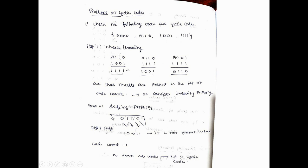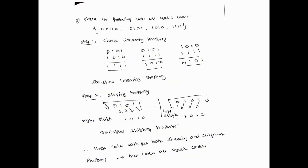Since the code 0011 is not in the set, this code does not satisfy the shifting property. Any code that does not satisfy both linearity and shifting property is not a cyclic code. So the given set of codes is not a cyclic code. We must check linearity first; once linearity is satisfied, we check shifting. If shifting is not satisfied, the code is not cyclic. Only if both properties are satisfied is the code called a cyclic code.